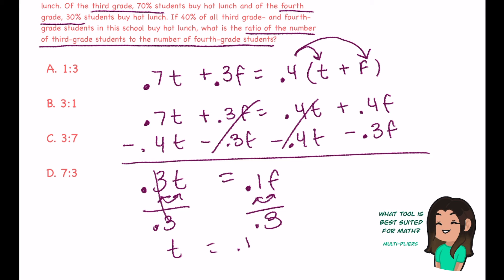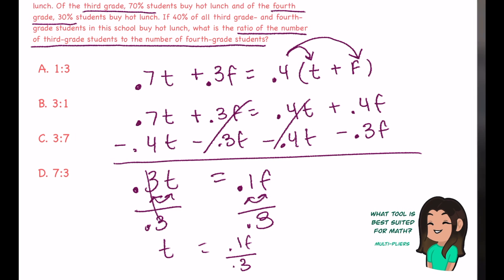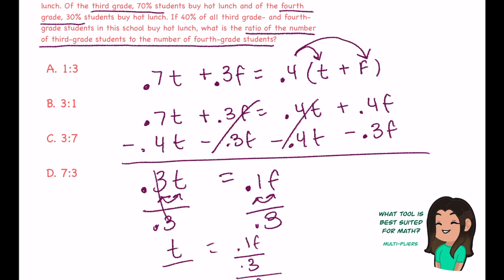But I have a variable right here. I want to get rid of this f. If I divide this entire thing by f, divide the entire thing by f, f's cancel out. I get third grade over fourth grade is equal to 0.1 over 0.3. For every one third grader, there are three fourth graders.